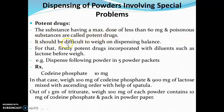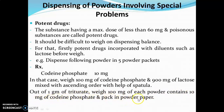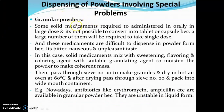The next problem is potent drugs. Substances having a maximum dose of less than 60 milligrams and poisonous substances are called potent drugs. These are difficult to weigh on a dispensing balance. Therefore, the potent drug is first incorporated with a diluent such as lactose before weighing. For example, to dispense five powder packets of codeine phosphate 10 mg: weigh 100 mg of codeine phosphate and 900 mg of lactose, mix in ascending order with a spatula. From one gram of triturate, weigh 100 mg — each powder contains 10 mg of codeine phosphate — and pack in powder paper.